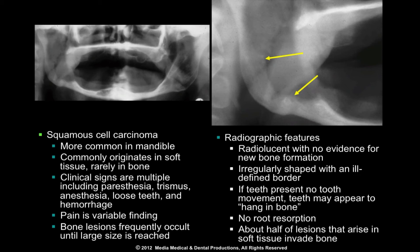The patient is usually male over the age of 50. Squamous cell carcinoma most commonly originates in soft tissue and only rarely in bone. Clinical features may include regional lymphadenopathy, paresthesia, anesthesia, foul smell, and trismus.